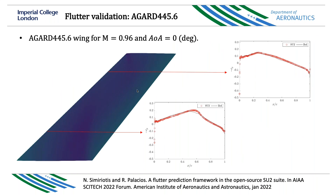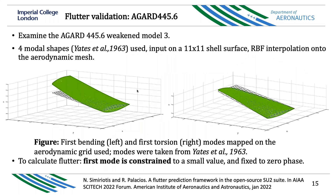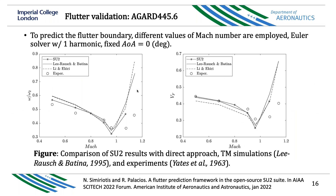Some numerical results. For validation, a canonical case — the AGARD 445.6. You can see here the pressure distributions. One step is to take the mode shapes, which in this case come from Nastran, and interpolate this structural model onto the aerodynamics using RBF. It works very nicely, as you can see in the frequency and flutter results, comparing against experiments and against literature.